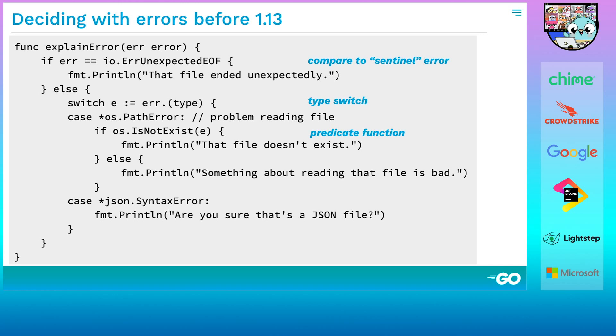Silly or not, explainError uses the same three methods for inspecting errors that nearly all Go code does. First, it compares the error to known values, which we call sentinel errors. One of those sentinel errors is the IO package's ErrorUnexpectedEOF. Second, it looks at the type of the error. The type itself encodes information, and once we have a value of that type, we can look inside it. Third, it calls a predicate function, a function that categorizes the error.